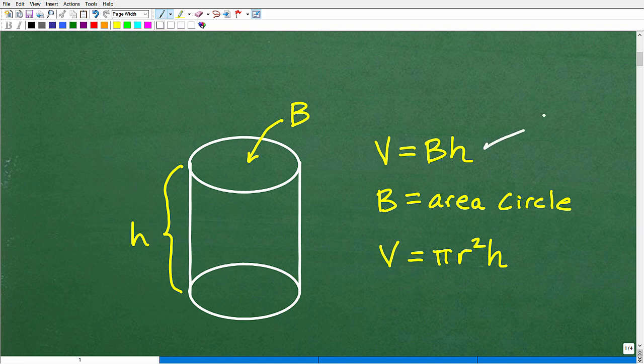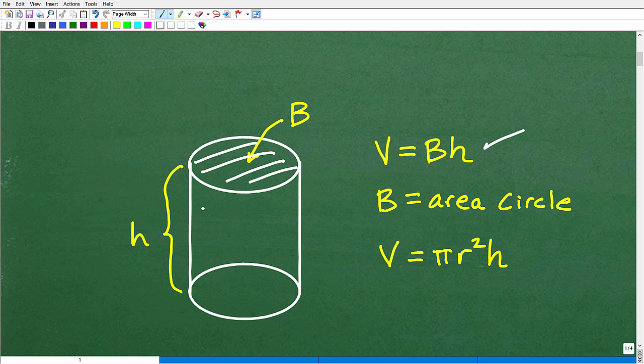So again, as I said, the volume is equal to the base, which would be the area of that base, times the height of the cylinder. So the B here is the area of the circle. Area of a circle is what? Well, it is pi r squared. So really this B is pi r squared. And what's r? That's the radius, right? That goes out from the center, out like so. From the center out to the edge of the circle is the radius. And we multiply that by the height.